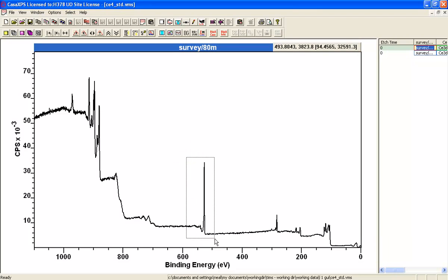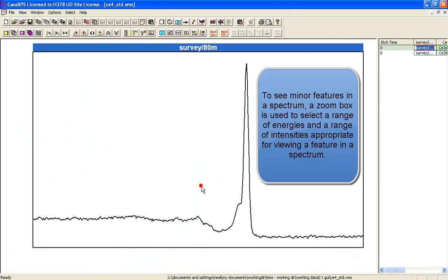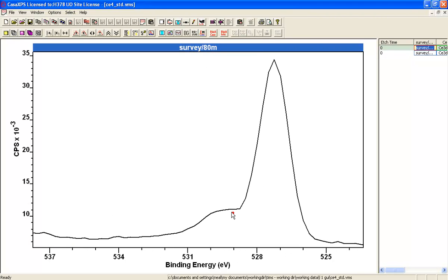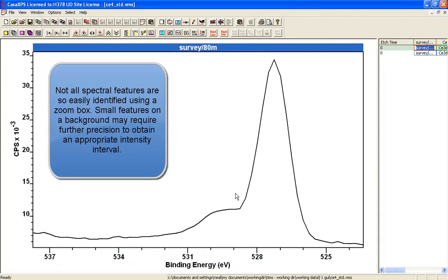A zoom box is reasonably obvious when you're looking at a peak like this, the kind of intensity range that you're interested in seeing. And you might also feel comfortable zooming in again to have a closer look at the data.